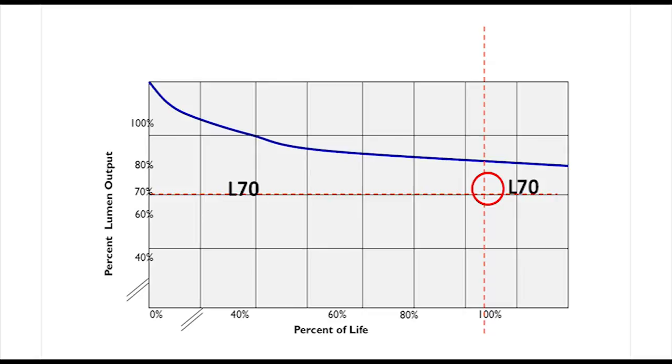Now for LEDs, it's different. LEDs do not yet have a metric for rated average life. With an LED, we talk about useful life. Useful life for an LED is defined as the point at which it reaches 70% of its original light output, sometimes referred to as L70.